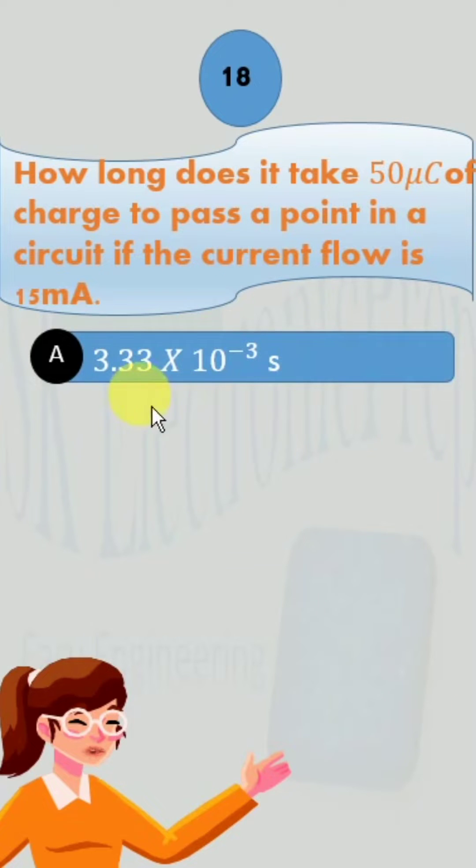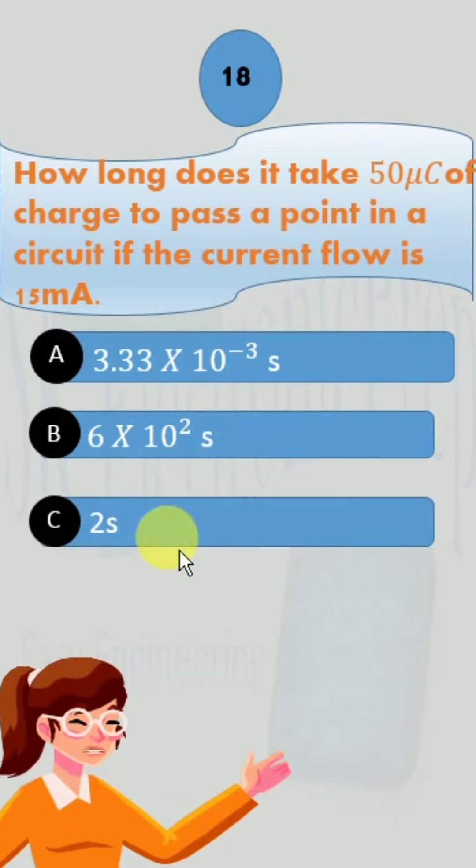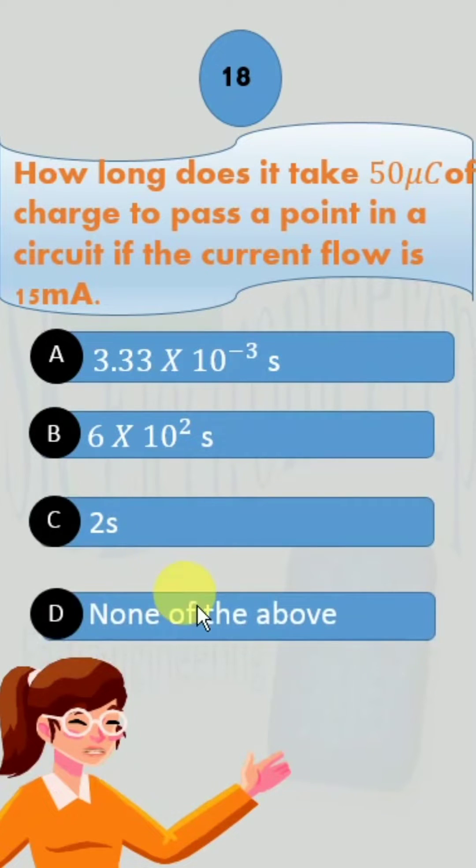Option A: 3.33 x 10 to the power minus 3 seconds. Option B: 6 x 10 to the power 2 seconds. Option C: 2 seconds. And D: none of the above.